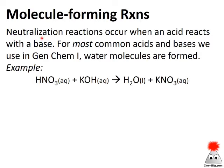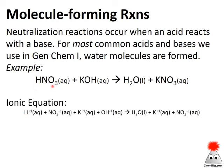Now let's look at molecule-forming reactions, starting with neutralization. Neutralization reactions are reactions between acids and bases, so we need to recognize common acids and bases. In Gen Chem 1, most common acids and bases react to form water molecules. For example, HNO₃ (nitric acid, aqueous) plus potassium hydroxide (aqueous) gives us a water molecule and potassium nitrate. In ionic form: nitric acid is a strong acid, so H⁺(aq) and NO₃⁻(aq) react with K⁺(aq) and OH⁻(aq) to give H₂O(l) and K⁺ and NO₃⁻ ions.